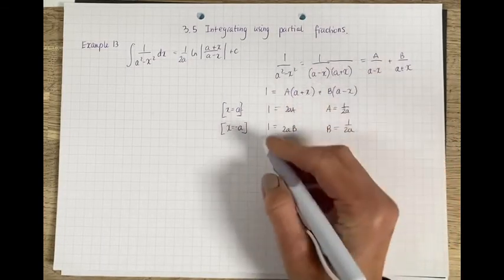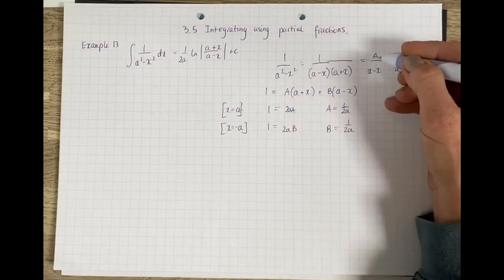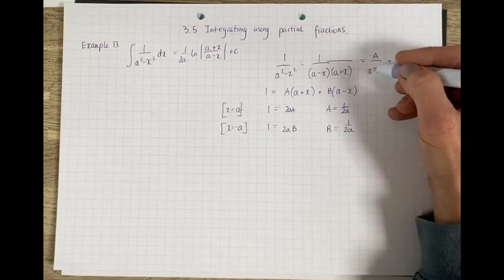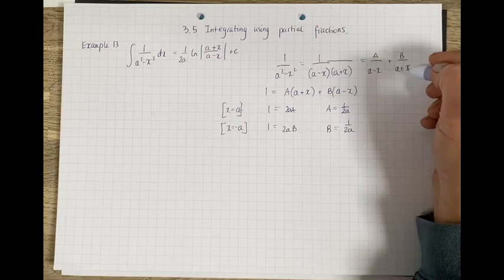So this expression split into partial fractions gives us 1 over 2a times (a minus x) plus 1 over 2a times (a plus x).